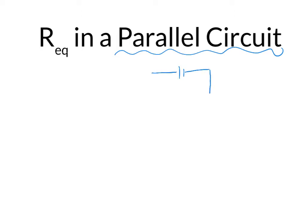So here is our battery, and we start out with our original loop as usual, but what's going to happen is that our loop is going to split, and it's going to wind up traveling between two resistors in two separate pieces of wire.